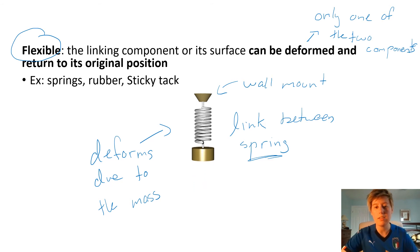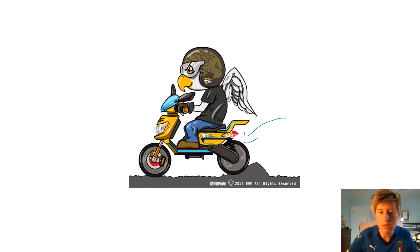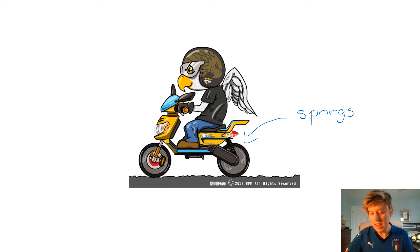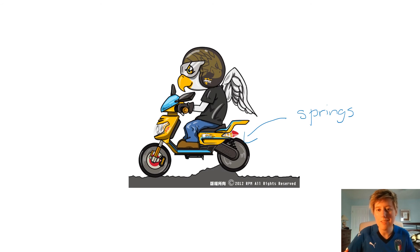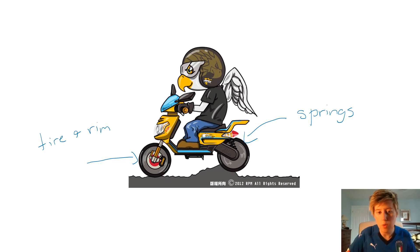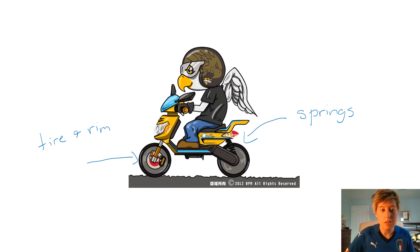Looking at a motorcycle example, there are two instances of flexible links. The first is at the springs — essentially the shock absorber — which constantly deform. Even though the springs are attached to the wheel axle which maintains its shape, because the springs are deforming this is considered a flexible link. Also, looking at the link between the tire and the rim: the tire deforms due to contact with the road, while the rim, usually made of metal, keeps its shape. Because the tire itself is deforming, the link between the tire and the rim is also considered flexible.